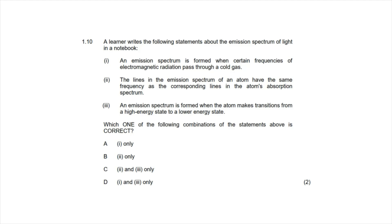Question 1.10: A learner writes statements about emission spectra. Statement 1 — an emission spectrum is formed when certain frequencies pass through a cold gas — is incorrect; that describes an absorption spectrum. Statement 2 — the lines in the emission spectrum have the same frequency as corresponding lines in the absorption spectrum — is correct. Statement 3 — an emission spectrum forms when an atom transitions from a high energy state to a low energy state — is also correct. Only statements 2 and 3 are correct, so the answer is option C.